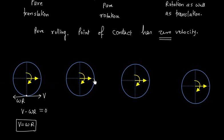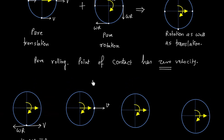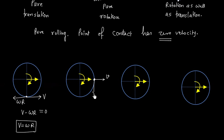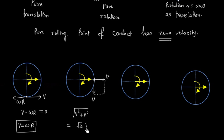Now consider the side point. Due to translation, it has velocity v in the forward direction. Due to rotation, it has velocity omega·r in the downward direction. Since omega·r equals v, the two components are both equal to v and perpendicular. So the resultant velocity is the square root of 2 times v, and since both components are equal, this angle is 45 degrees.